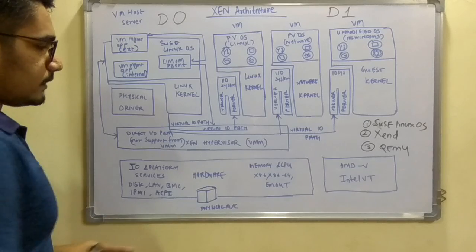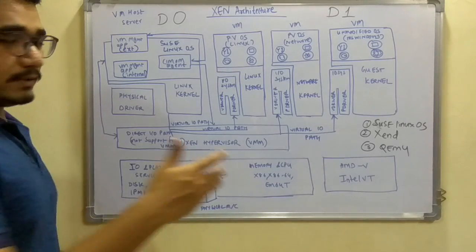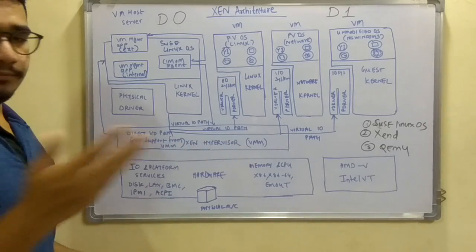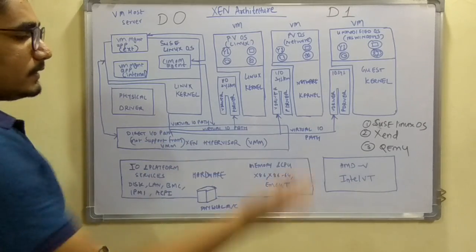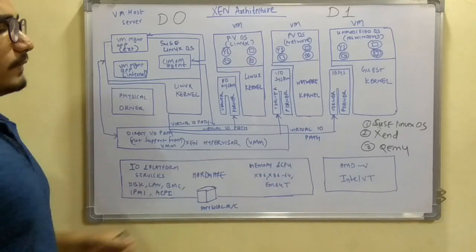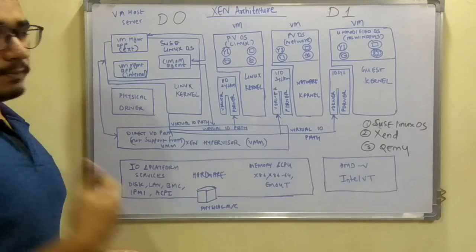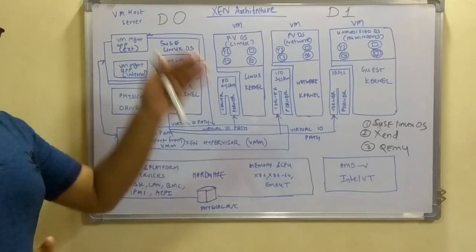Next you have the physical machine, that is the hardware itself, then you have the memory and the CPU, the underlying OS which is running x86 and x86_64 and EM64T as well. Alongside you have the AMD-V, that is Advanced Micro Devices Virtualized Server, and an example of this is Intel VT, that is Virtual Terminal.